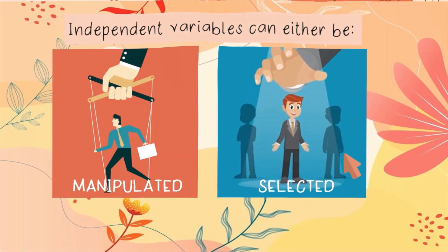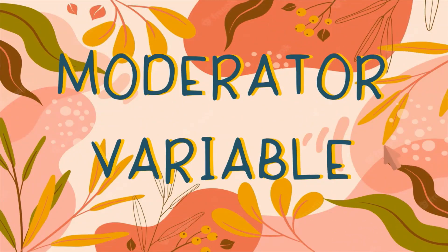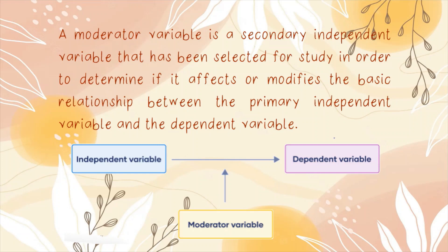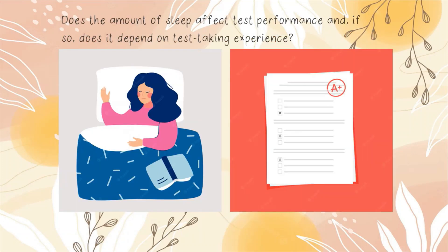Have you heard about moderator variables? A moderator variable is a secondary independent variable that has been selected for study in order to determine if it affects or modifies the basic relationship between the primary independent variable and the dependent variable. Let's make use of the previous activity and try to determine the moderator variable.